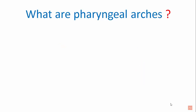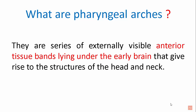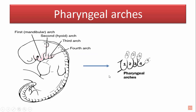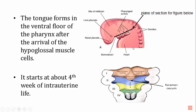Before that, let's know what pharyngeal arches are. They are a series of externally visible anterior tissue bands lying under the early brain that give rise to the structures of the head and neck. In this picture of an embryo, these tissue bands are the pharyngeal arches. The first is the mandibular arch, the second is the hyoid arch, the third arch, and the fourth arch. The fifth arch is also present but it is rudimentary. These are the externally visible tissue bands.